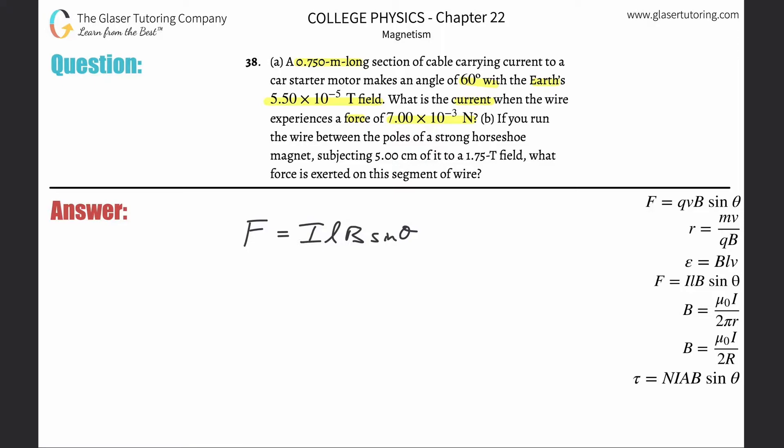What are we solving for? The current, which is I in this equation. Take everything else and cross multiply. There's the formula.